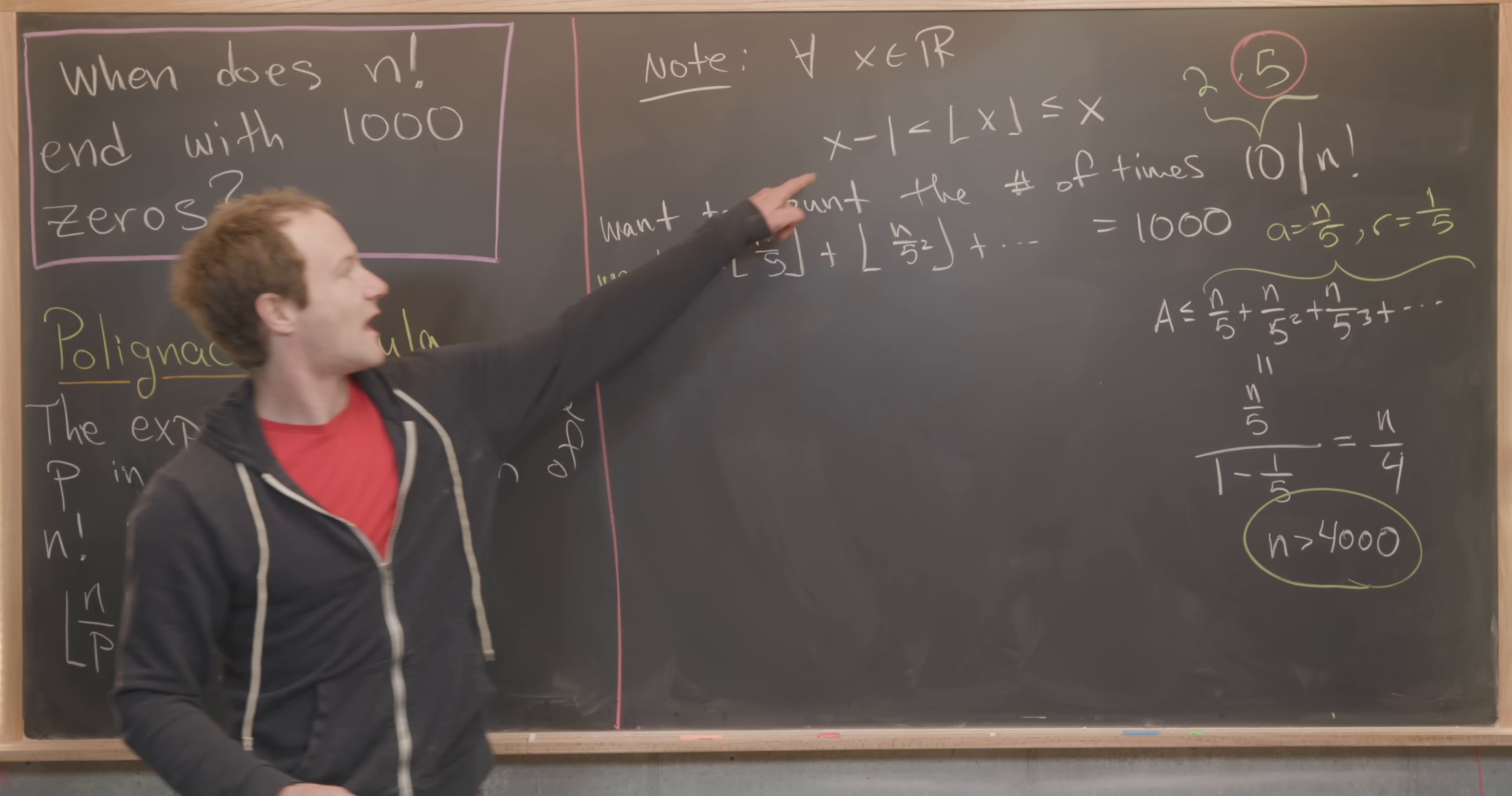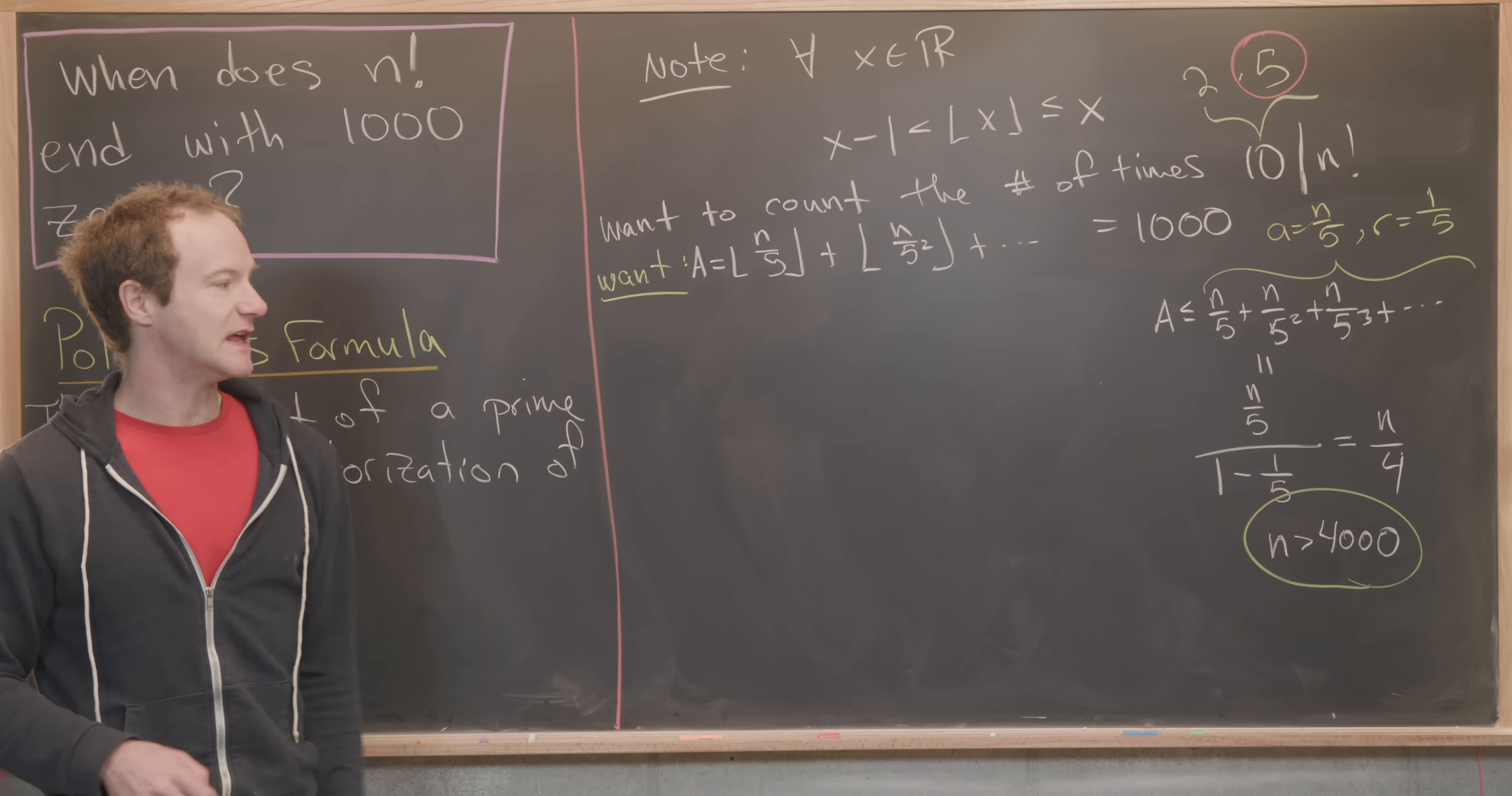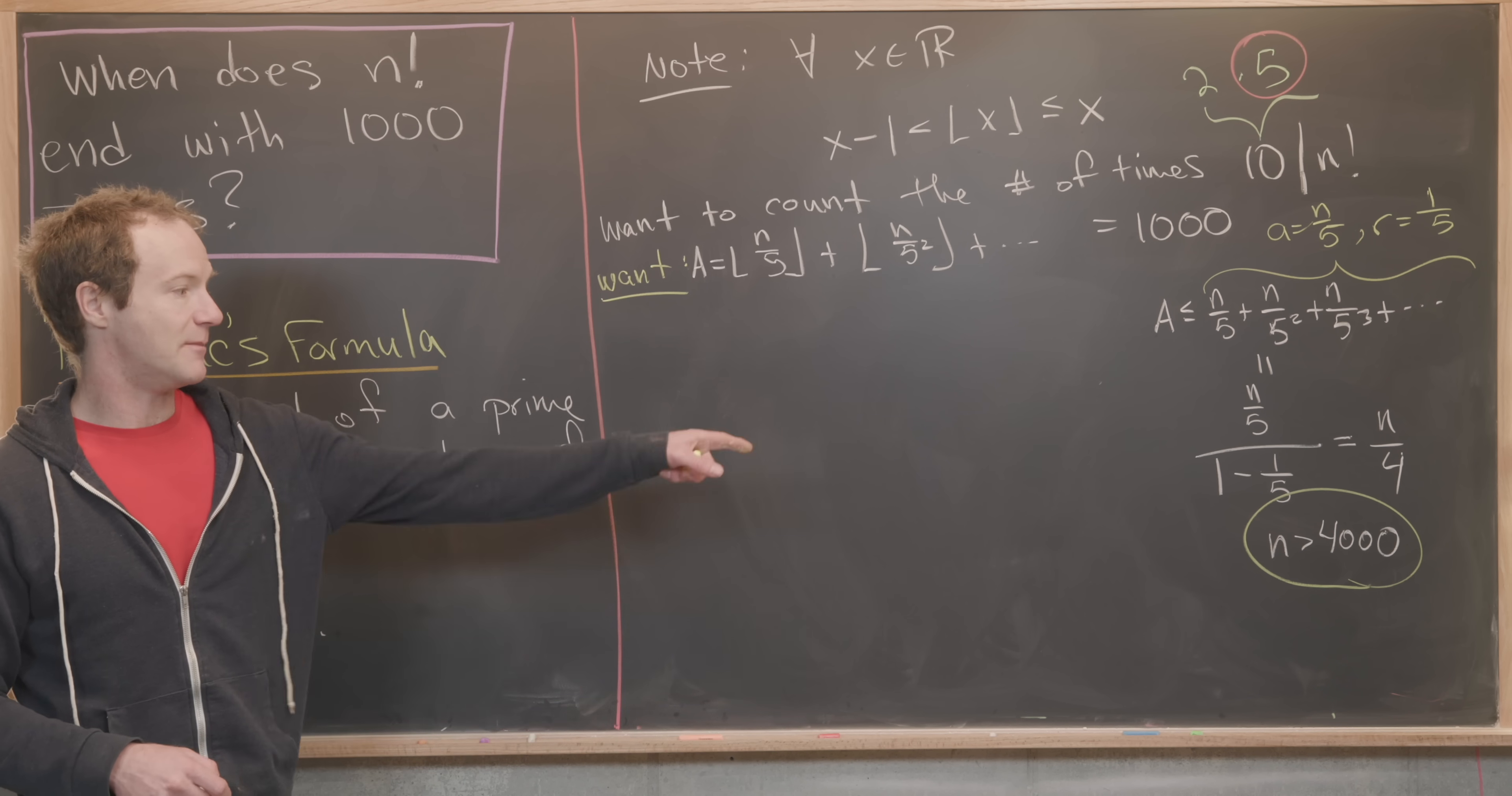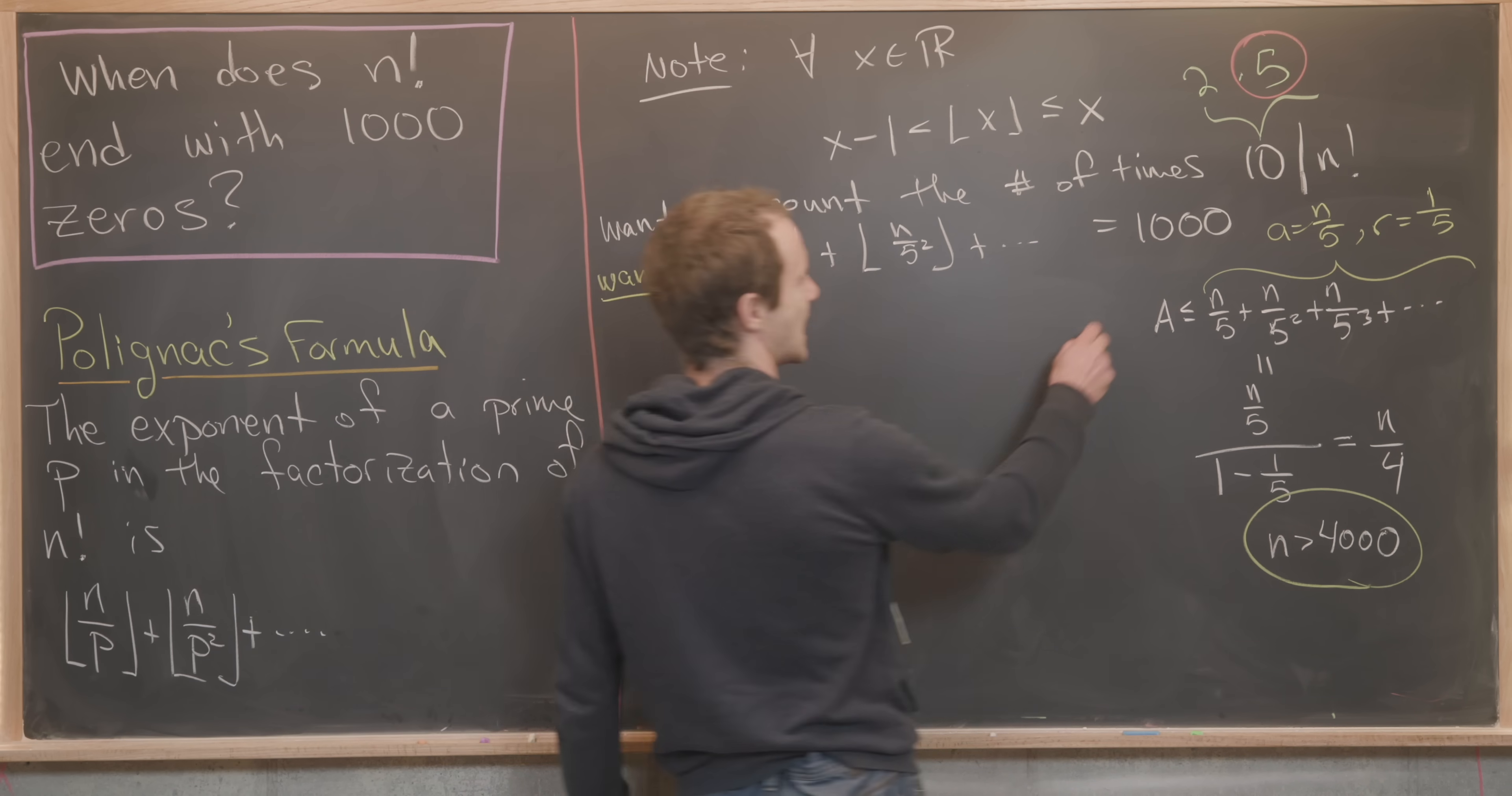So now we'll apply the other side of the inequality, this x minus one, and we'll use some information about our top part of the inequality to turn it into a finite sum.